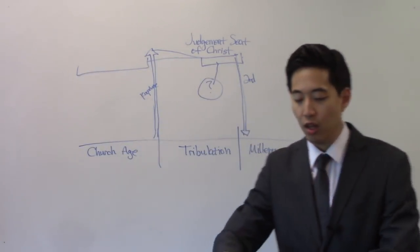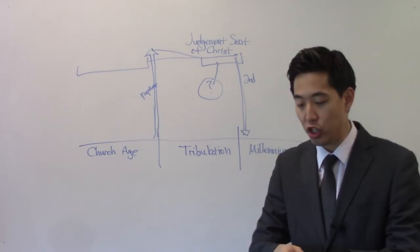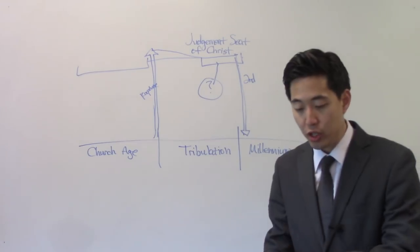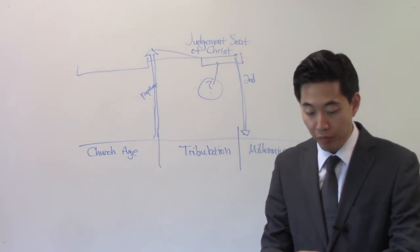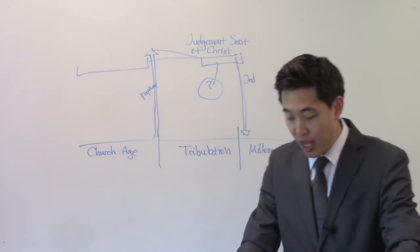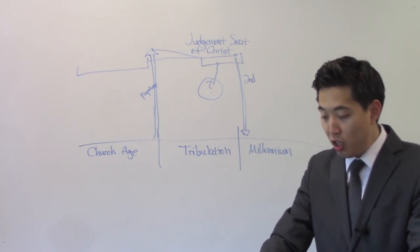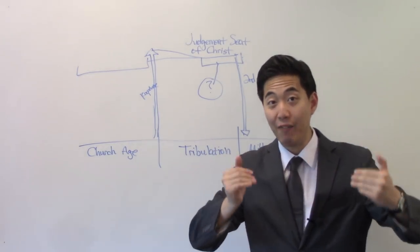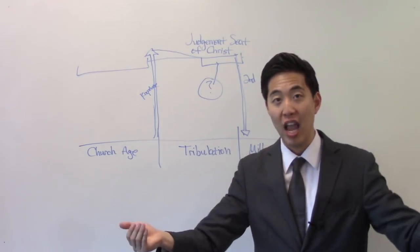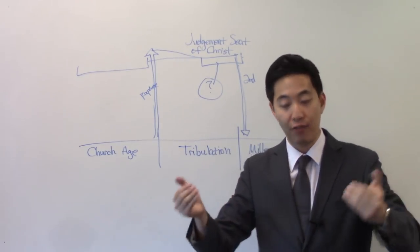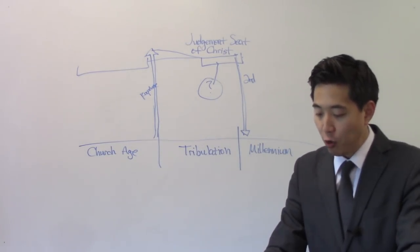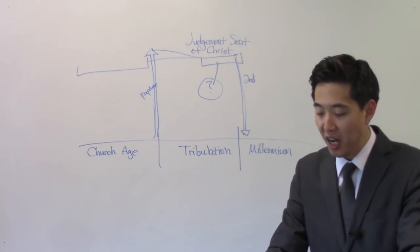Let's look at 2 Corinthians 5. There's no doubt we have to go through the judgment seat of Christ. Notice what the Bible says at verse 10. For we must all appear before the judgment seat of Christ. So Paul says we. He's a saved Christian, referring to saved believers here. And he says we all. These are all saved Christians.